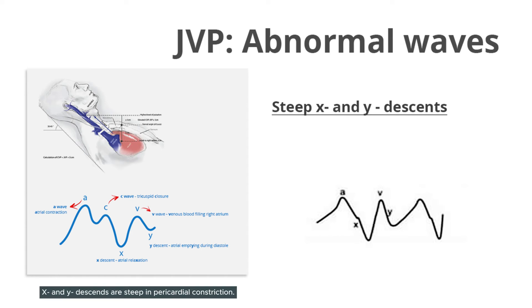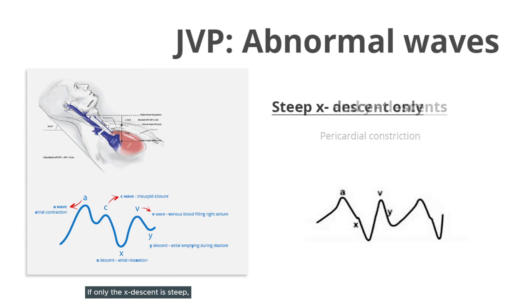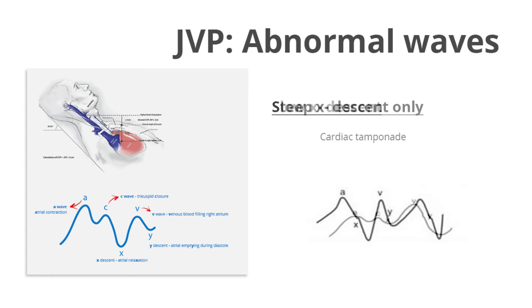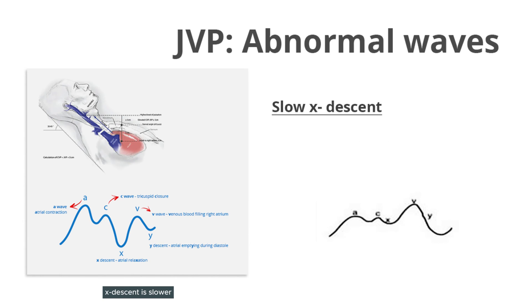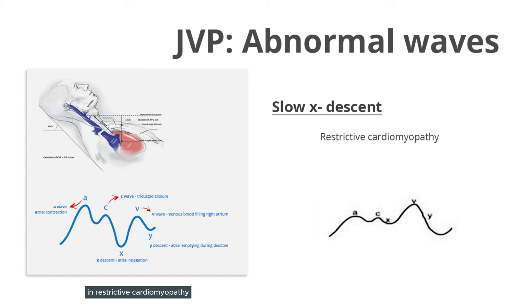X and Y descents are steep in pericardial constriction. If only the X descent is steep, it is seen in cardiac tamponade. X descent is slower during slow relaxation of the right atrium, in restrictive cardiomyopathy and tricuspid regurgitation.